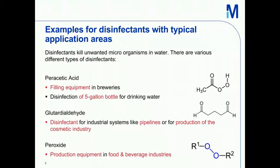Here are different examples for disinfectants with typical application areas. Disinfectants normally should kill unwanted microorganisms in water. We have different types of disinfectants, and all of them have different advantages and disadvantages. Here are three examples. One is peracetic acid, which is for example used to disinfect filling equipment in breweries, and also big five-gallon bottles for drinking water. The second example is glutaraldehyde, which is a disinfectant for pipelines or for production, and also peroxide, which is mainly used in food and beverage industries.